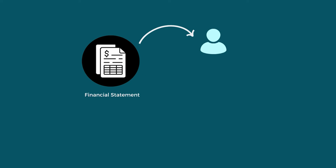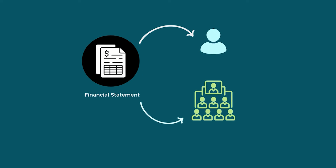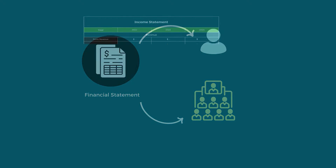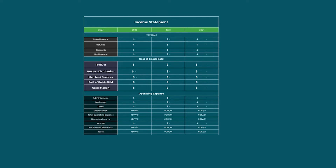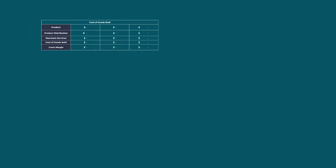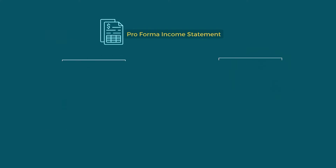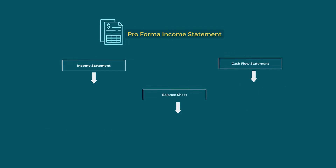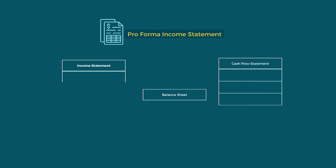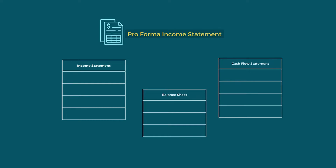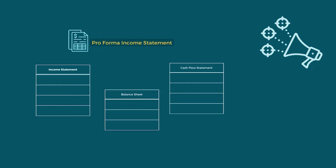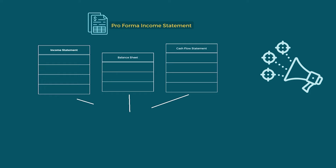Financial statement of a person or an organization is a common term most of us have heard. But these detailed statements can differ based on their receiver. Every financial detail usually isn't disclosed to a third party. So there comes the pro forma financial statement, where all the internal financial information are disclosed and are interconnected to each of the calculations.